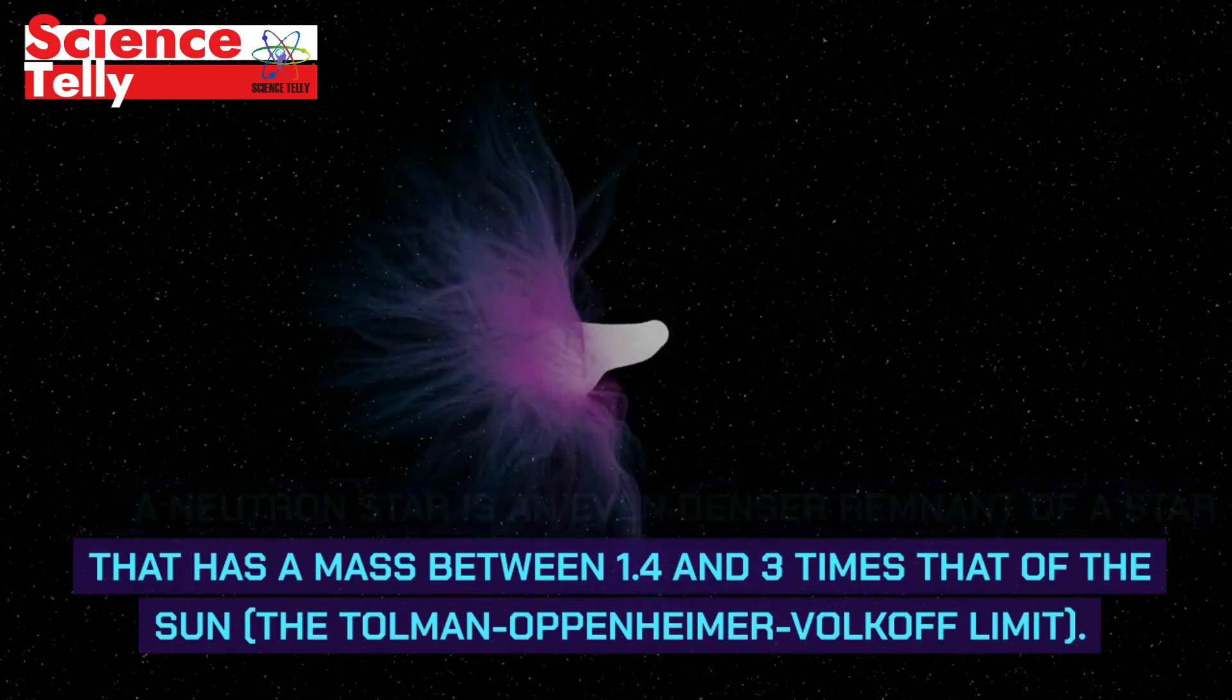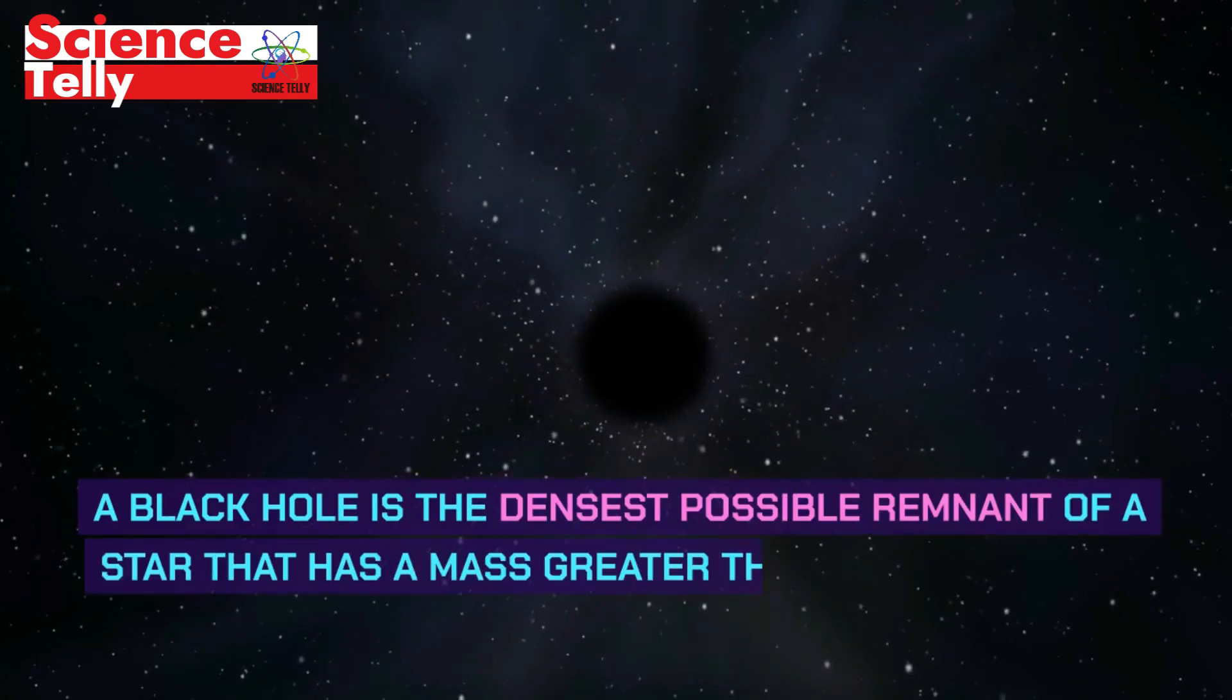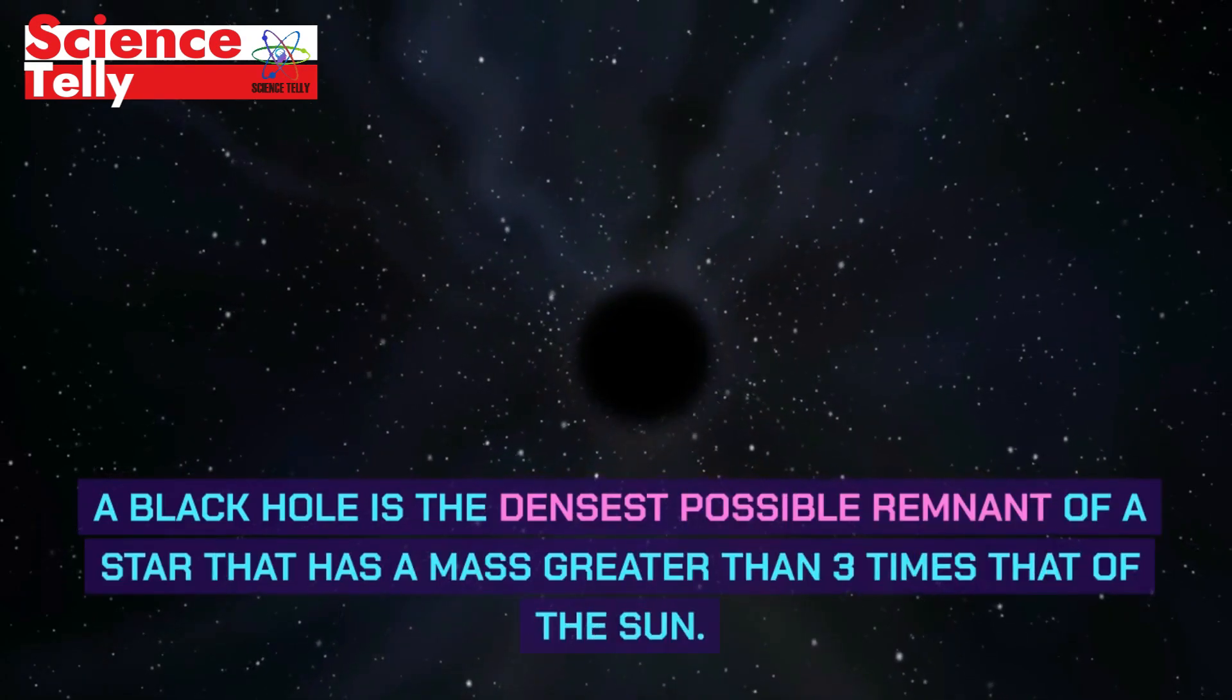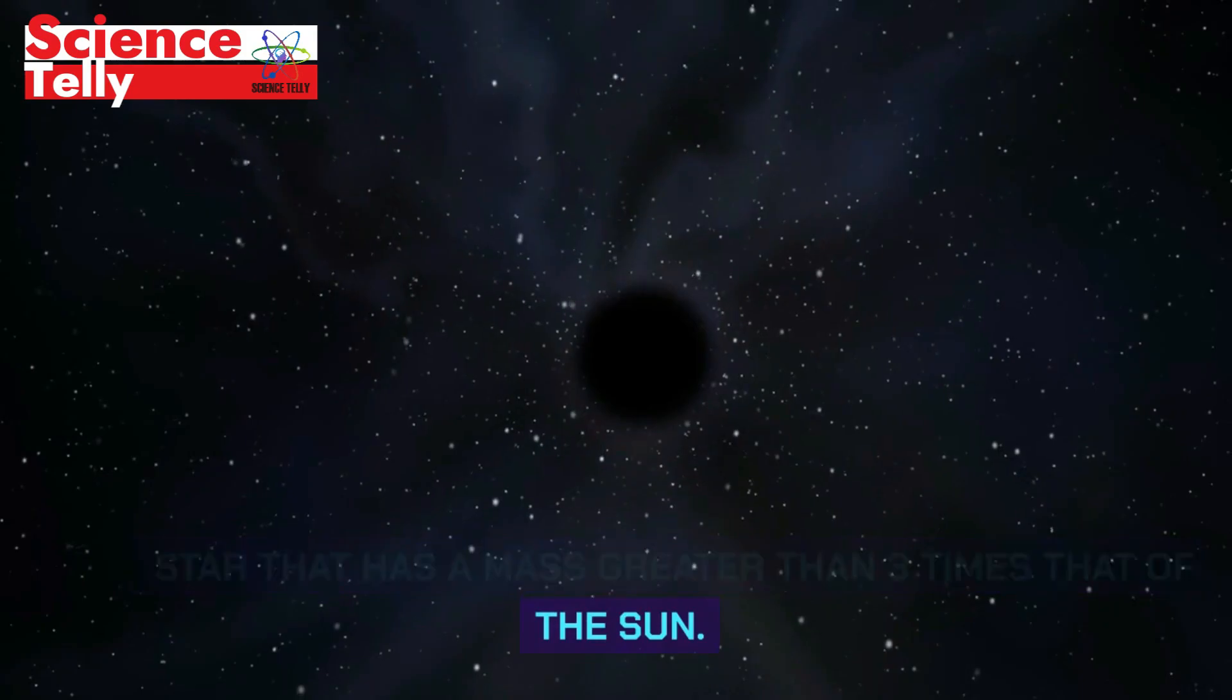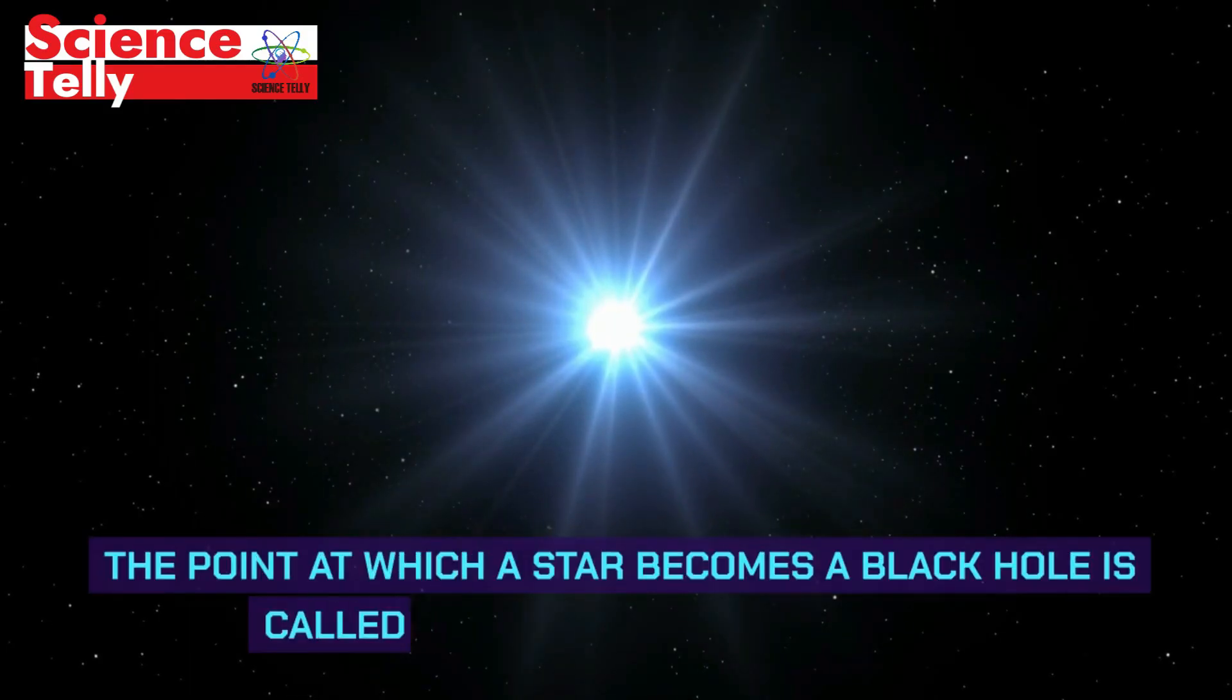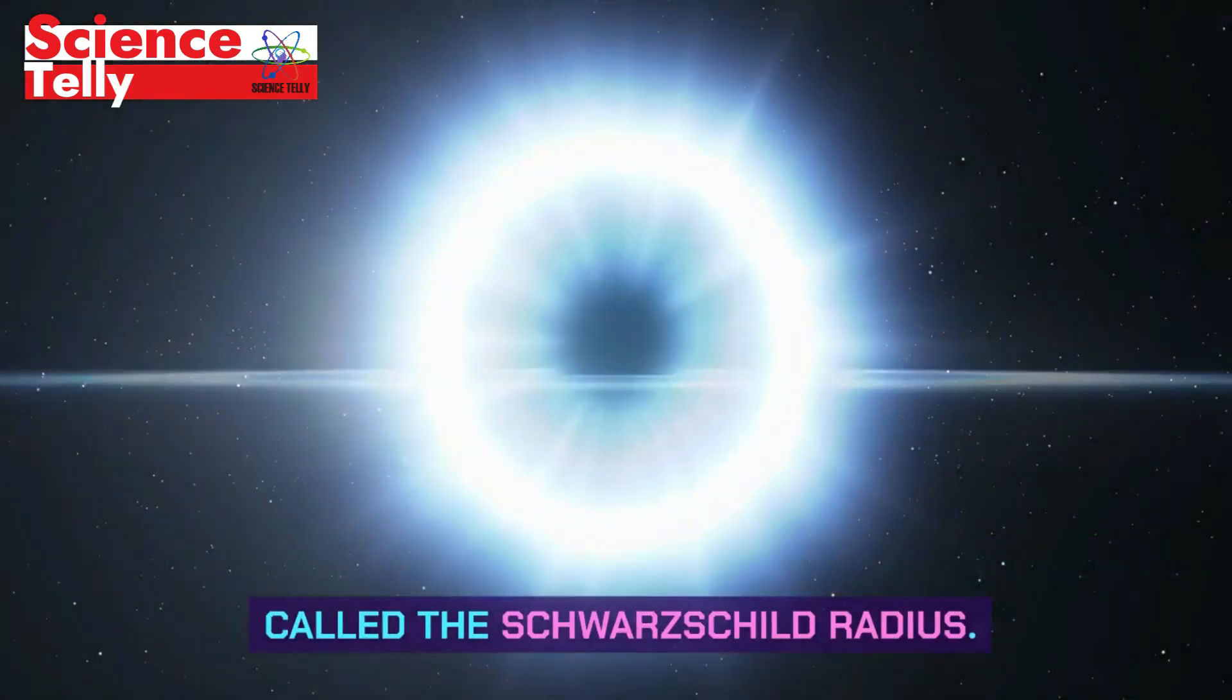A black hole is the densest possible remnant of a star that has a mass greater than 3 times that of the sun. The point at which a star becomes a black hole is called the Schwarzschild radius.